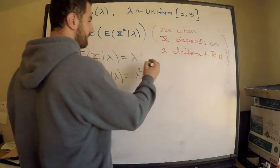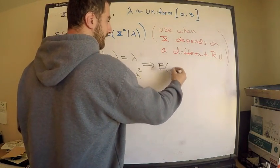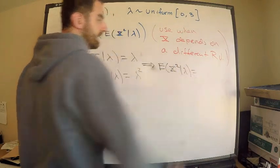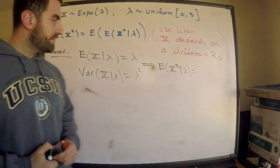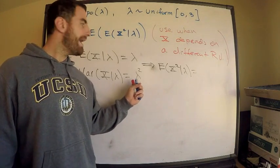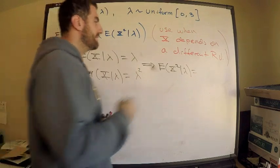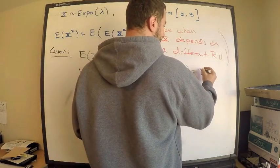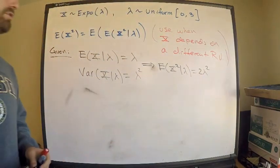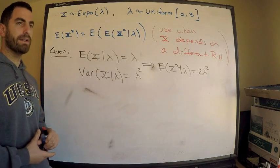Which means, what is the second moment? So from this, the second moment of the random variable x given lambda, how do you find the second moment? Well, you take the variance, and then you add the expectation squared. So this is exactly the variance plus the expectation squared, which is 2 lambda squared.